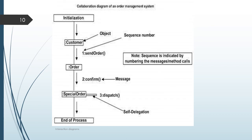Collaboration diagram showing time sequence and relevance. Customer initialization, percent order — number one task. Then order confirm, that is special order — second process. Dispatch — third process. First task: sending the order. Second task: confirming the order. Third task: dispatching the order.